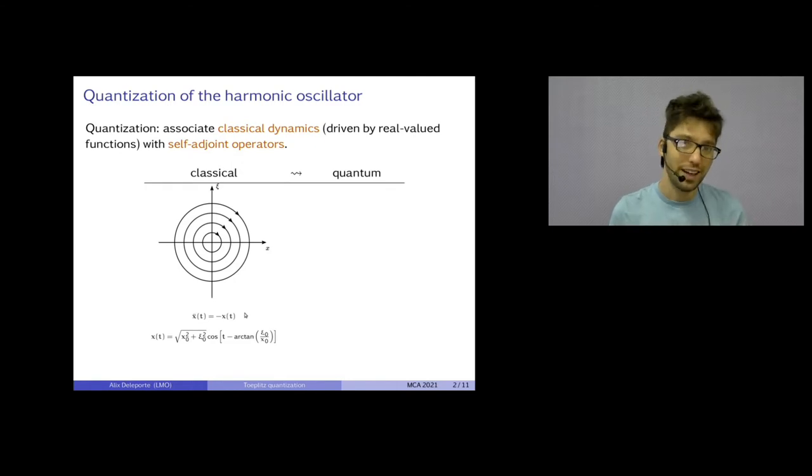The ODE is that the second derivative of x is minus x. And the solution, well, you can't explain it to a small child. Now you need some trigonometry.